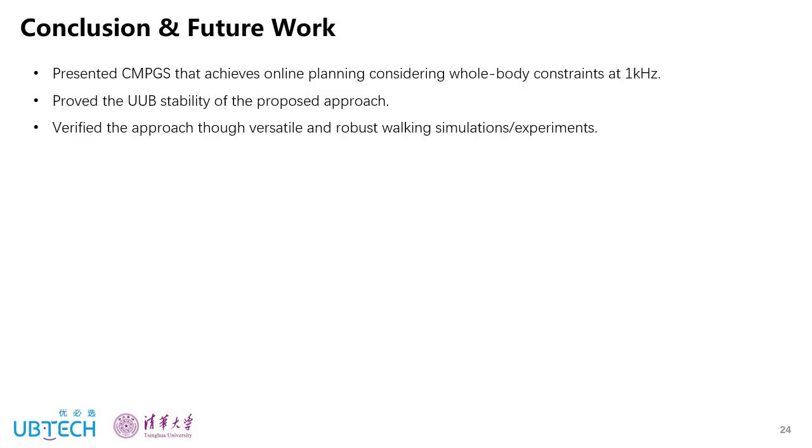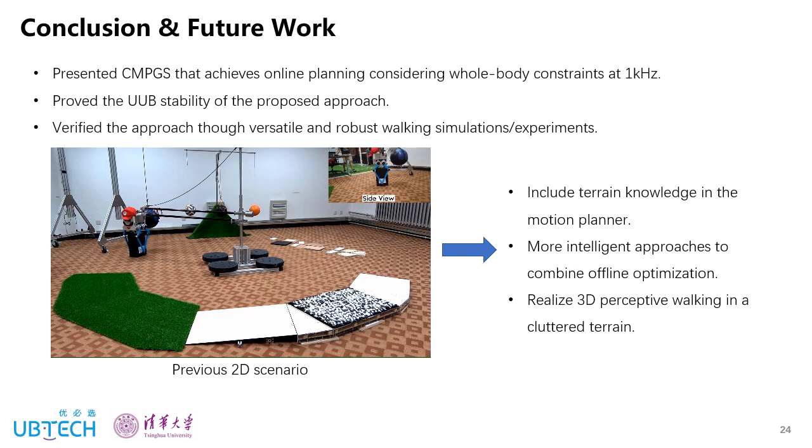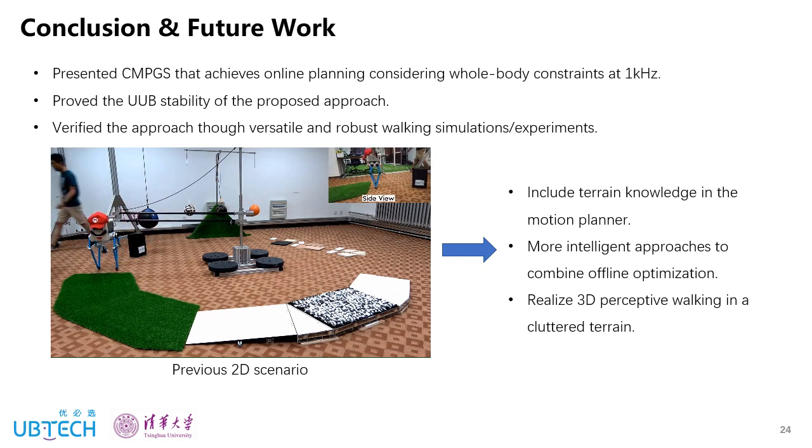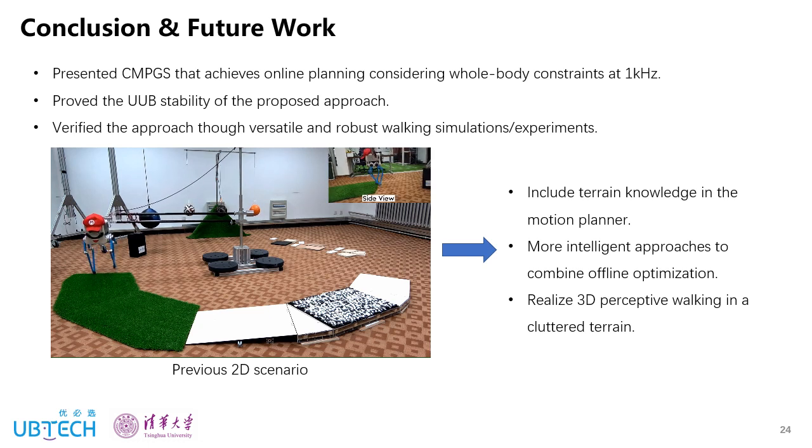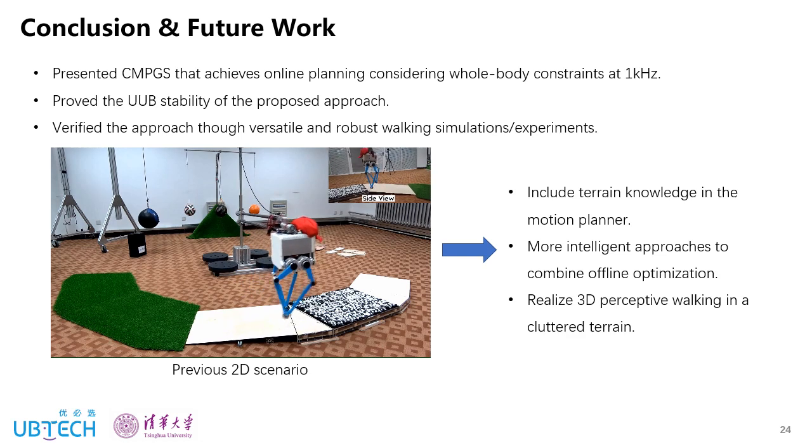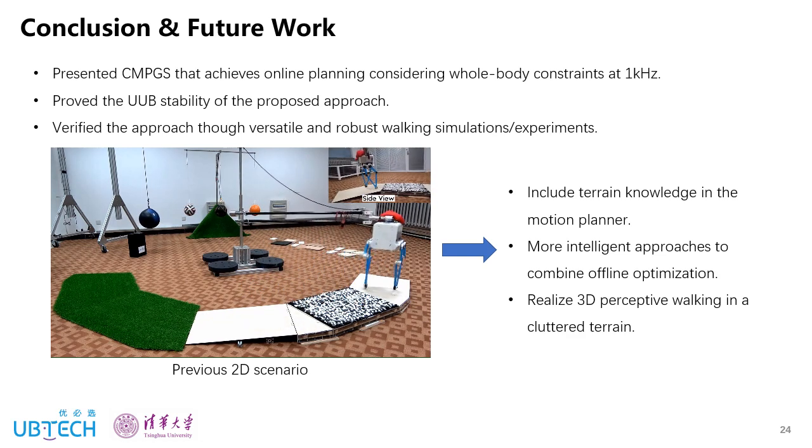Finally, to conclude this presentation, we presented CMPGS that achieves online planning considering whole body constraints at 1kHz, and we proved the UUB stability of this approach, and we verified this approach through versatile and robust walking simulations and experiments. For future work, I want to first show this previous demo of our 2D robot walking in this Mario scenario. This robot blindly walks over this uneven terrain without any terrain knowledge. So in the future, we want to include terrain knowledge in the motion planner and explore more intelligent approaches to combine offline optimization. Finally, we want to realize 3D perceptive walking in the cluttered terrain in this same scenario.